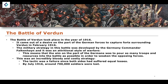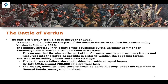By July of 1916, around 700,000 soldiers were lost as a result of this style of warfare. The French were close to breaking point, but they were under the command of General Pétain, who managed to hold out. Theoretically, if the Germans had continued pushing more soldiers into the conflict, eventually the French would have had to capitulate — they were close to breaking point. But the Battle of Verdun resulted in heavy losses on both sides, around 700,000 losses by July of 1916.